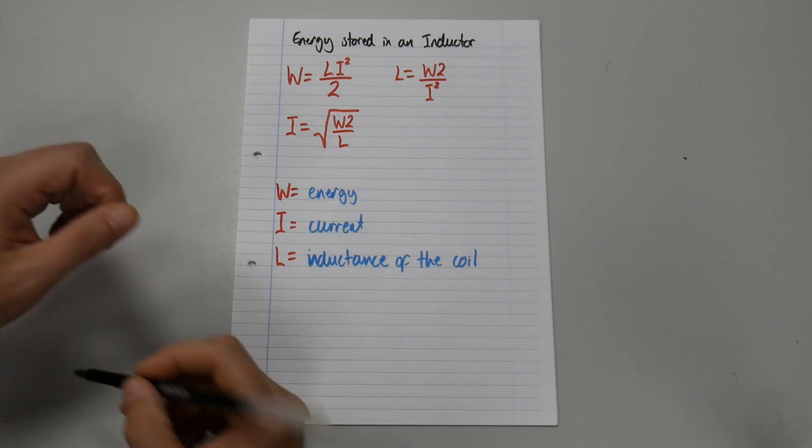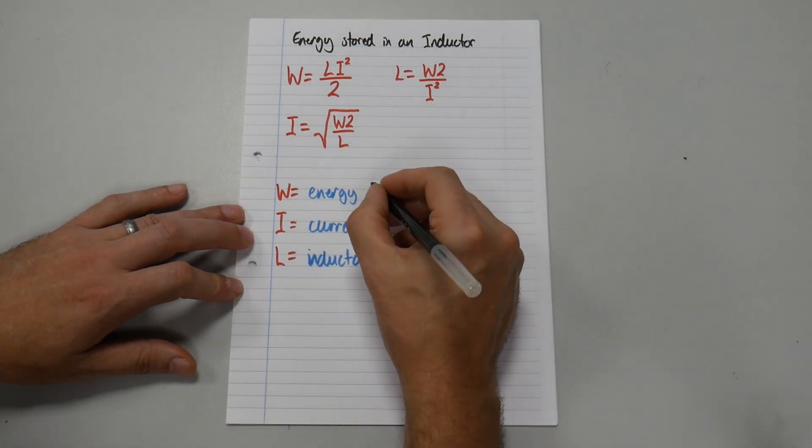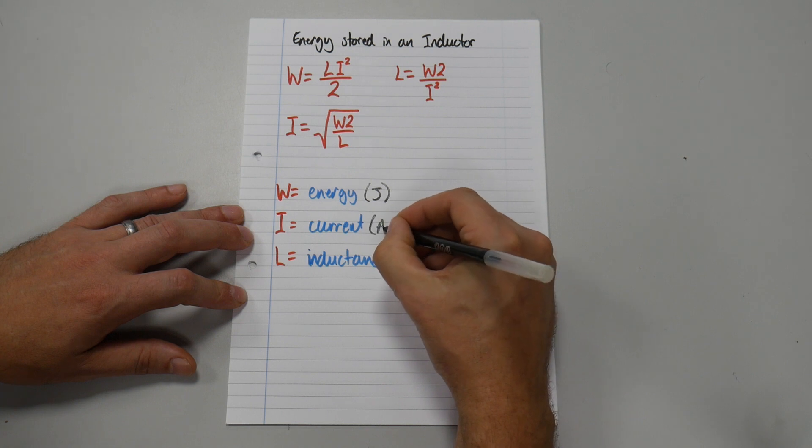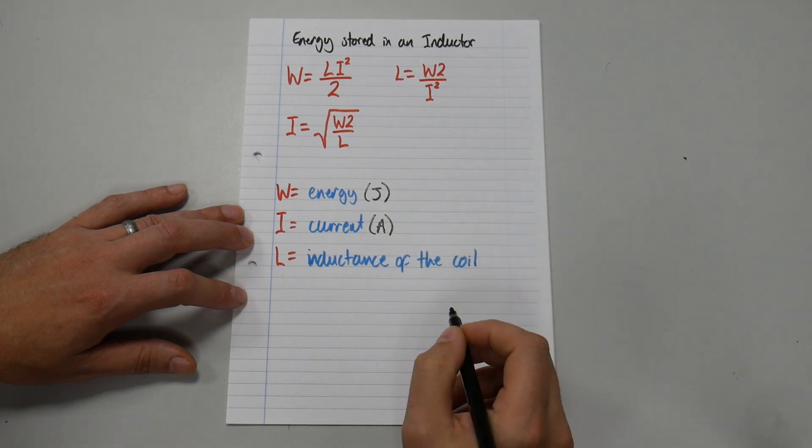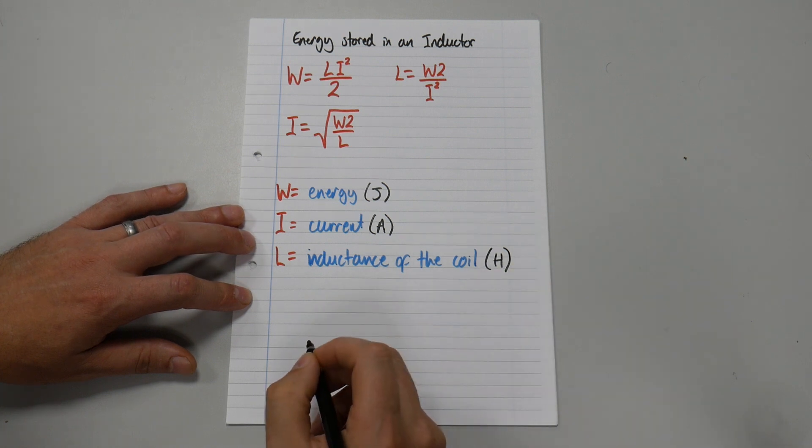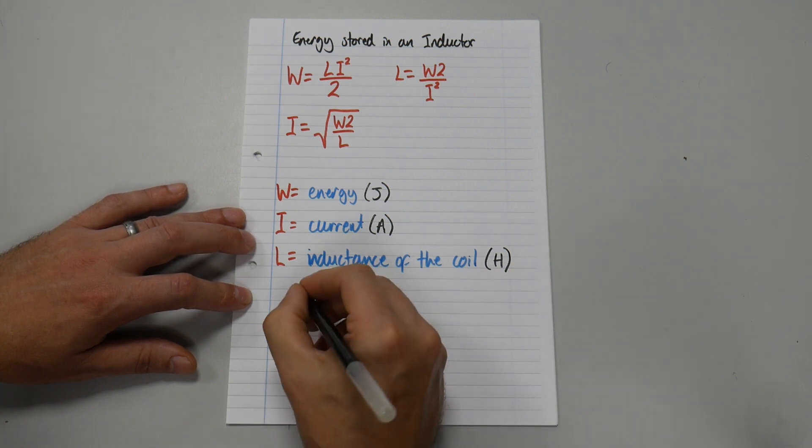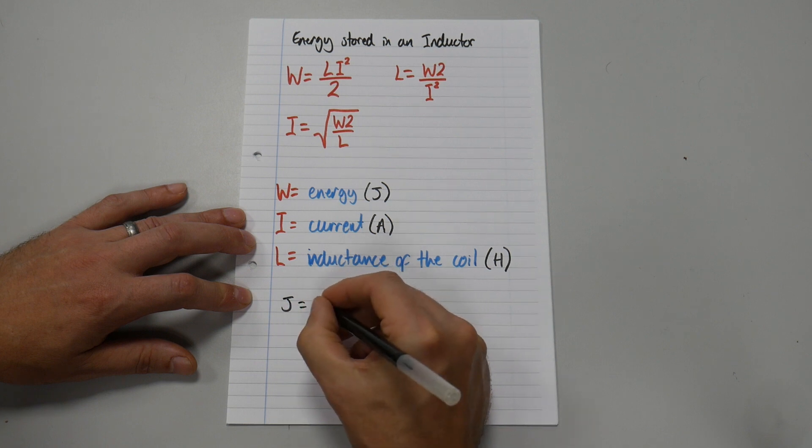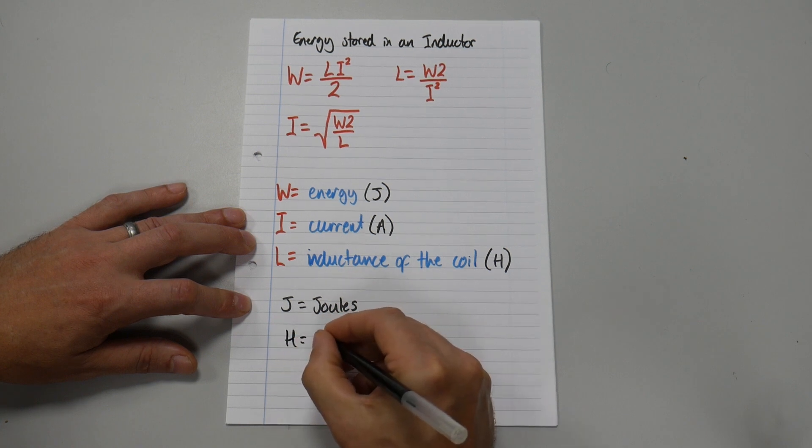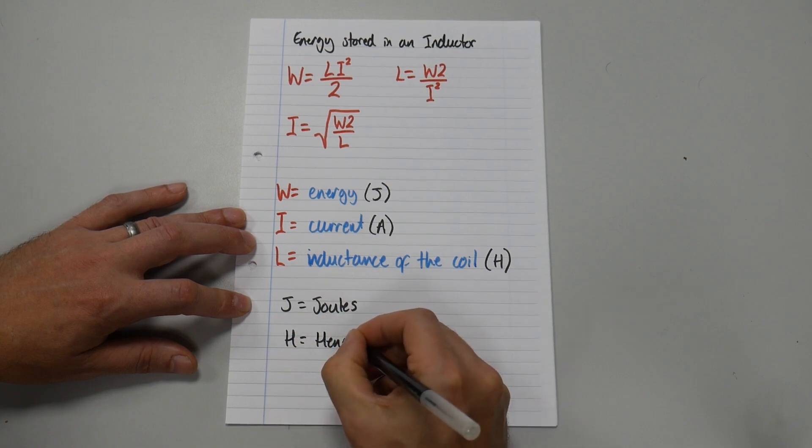And let's write down our SI unit. So for W, energy is capital J, joules. Current, you know that, capital A for amps. And inductance is measured in capital H, which is Henry's. So if you're unsure, you can just quickly make a note. J equals joules, capital H equals Henry's. There we go.